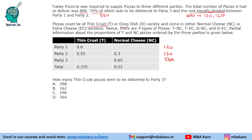Pizzas can be of thin crust or deep dish variety, and come in either normal cheese or extra cheese versions — giving 4 types. You can mix and match: thin crust with normal cheese, thin crust with extra cheese, deep dish with normal cheese, and deep dish with extra cheese. These are denoted TNC, TEC, DNC, and DEC. Some information is given about the proportions of these pizzas ordered by the three parties.